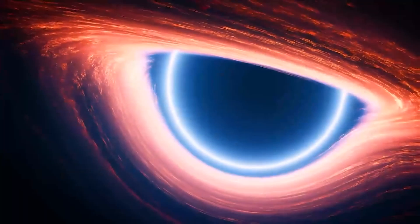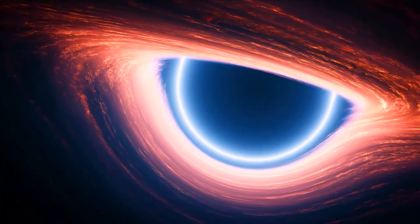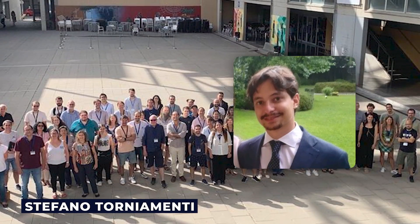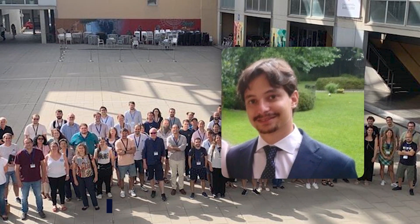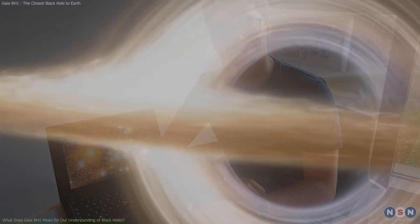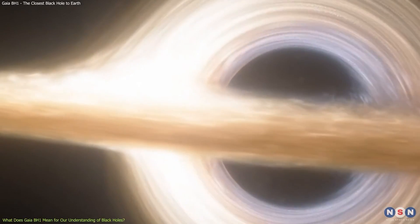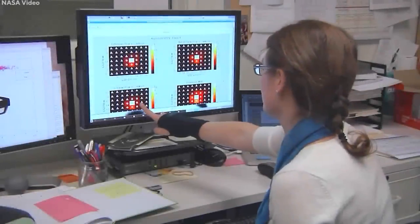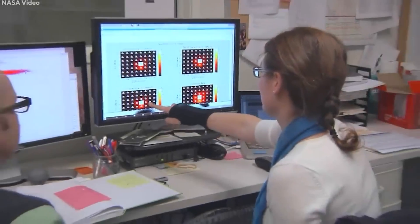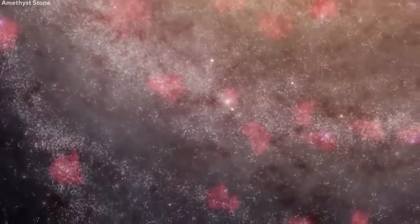In order to make the identification of what could be the closest black holes to our planet, a team led by Stefano Torniamenti, a post-doctoral researcher at the University of Padua, produced a simulation of the movements and evolutions of stars in the Hyades. Black holes were also included in the equation. The scientists then compared the simulated velocities and positions with those obtained from previous measurements.